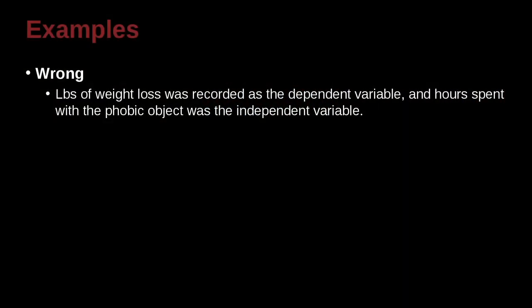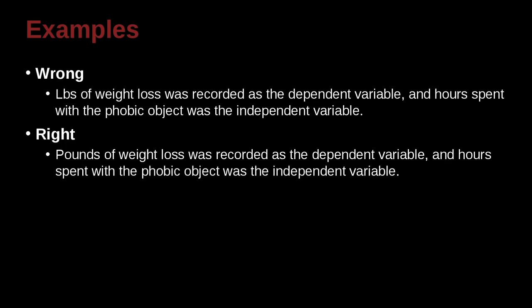Here's another example. Pounds of weight loss was recorded as the dependent variable, and hours spent with the phobic object was the independent variable. And of course what we've done here is the abbreviation pounds. So you may be talking about pounds that are inside your table, but you cannot abbreviate at the beginning. You have to write it out at the beginning of the sentence. Remember we covered that in a previous unit.